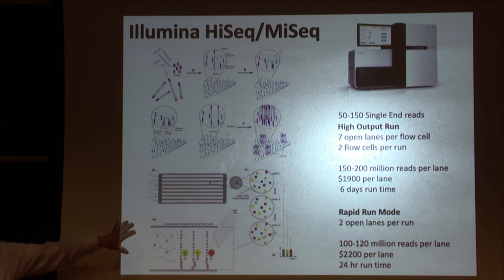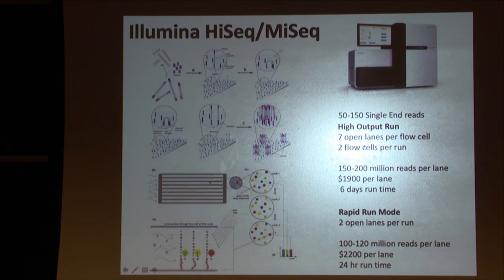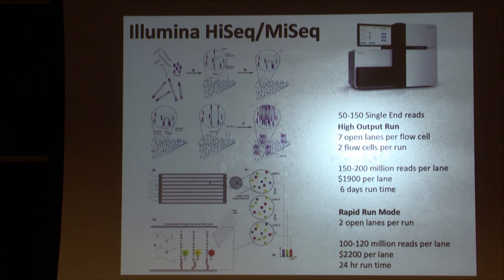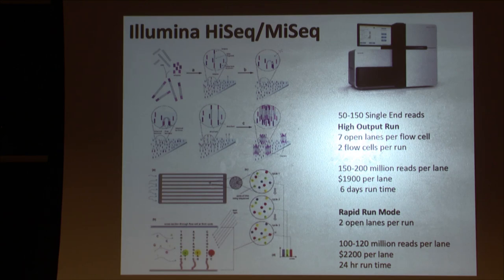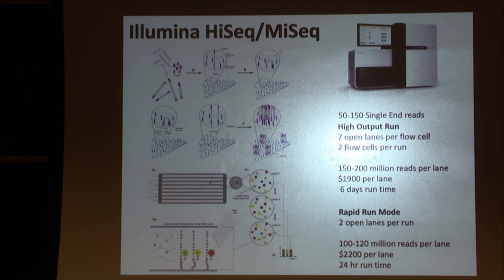The principle is kind of the same. There are different HiSeq and MiSeq sequencers now. HiSeq can create about 150 to 200 million reads per lane, with about seven lanes open, so you can get about 1.4 billion reads from a HiSeq run. These sequencers can run in different patterns - I can go into finer details later.